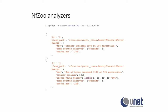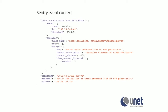When an analyzer decides something unwanted is happening, it reports to Sentry an event which contains all the relevant information: which IP is probably under attack, which analyzer triggered the alert, and on what basis it made that determination. This gives the responsible network administrator all the information they need at hand.